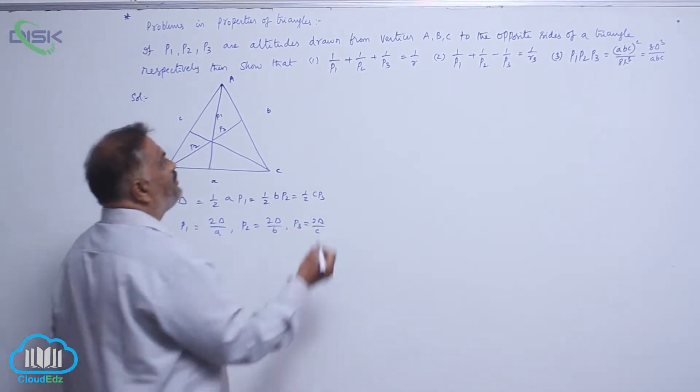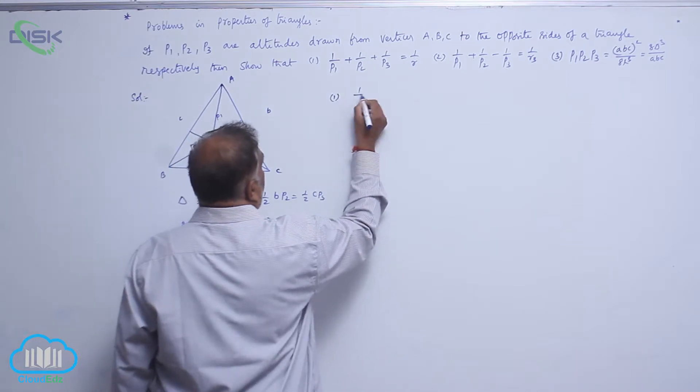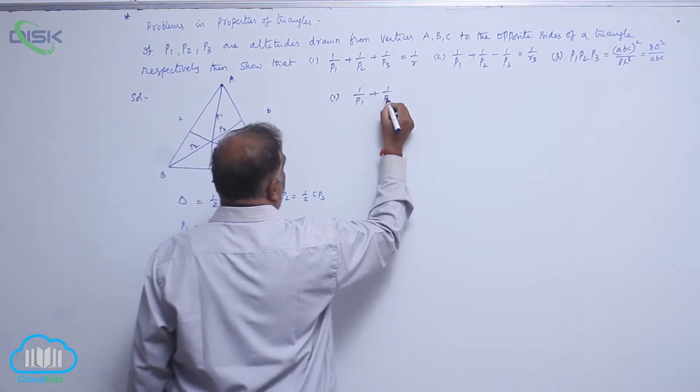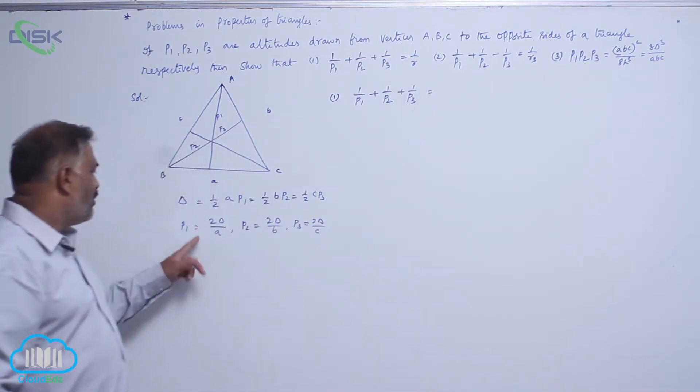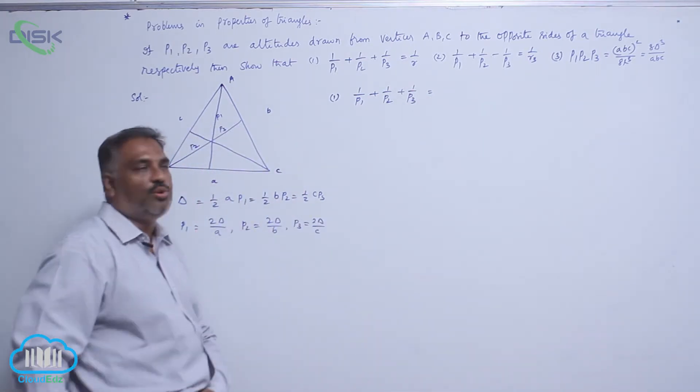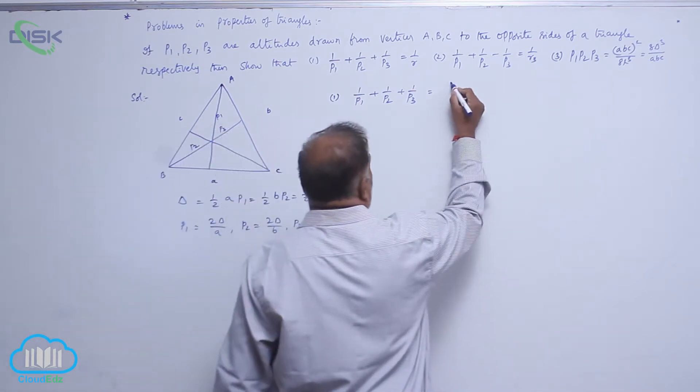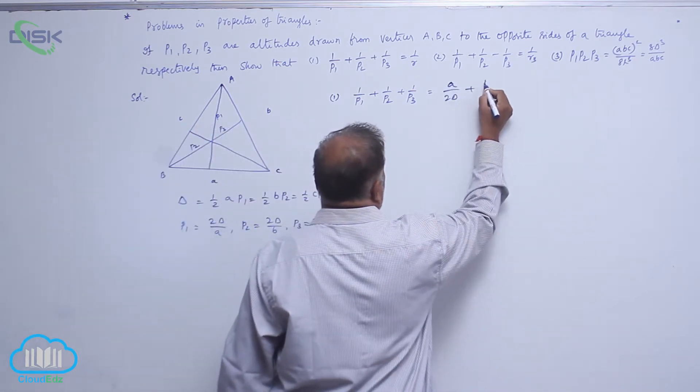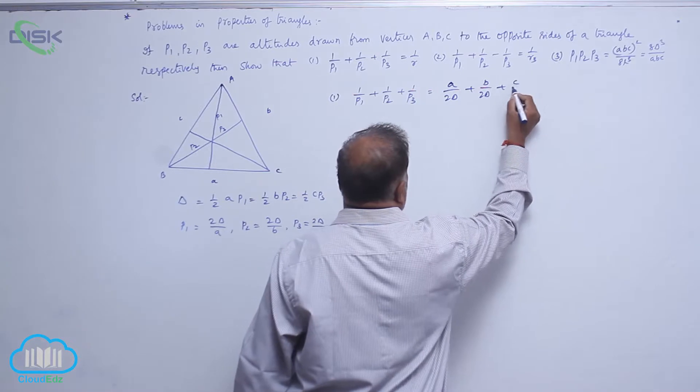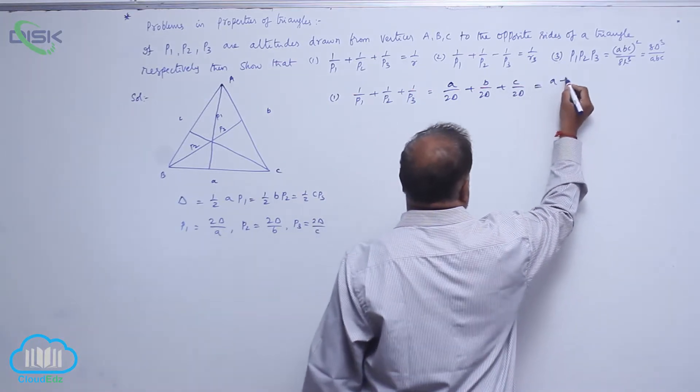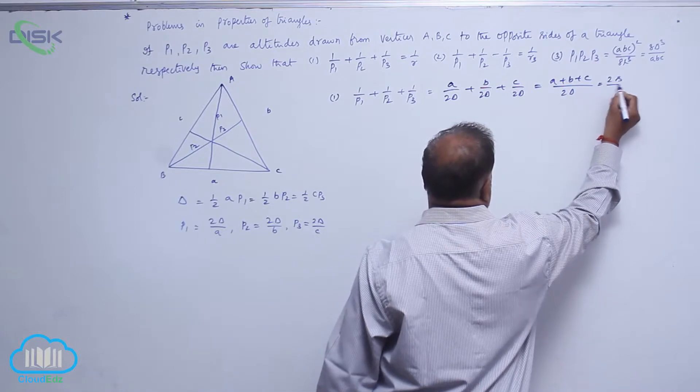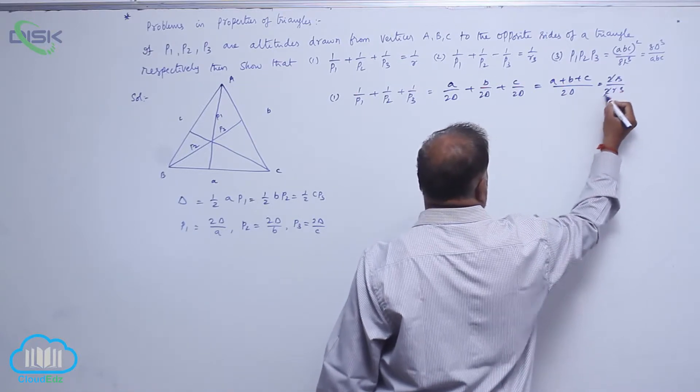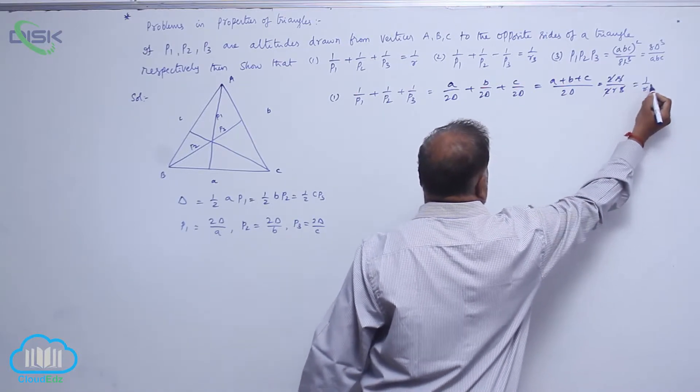Now, we will prove one by one. Let us take the first one: 1 by P1 plus 1 by P2 plus 1 by P3. We need to take the reciprocal. That is A by 2 delta plus B by 2 delta plus C by 2 delta, which is A plus B plus C divided by 2 delta, equals 2s by 2rs. The 2 gets cancelled. This is 1 by r.